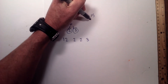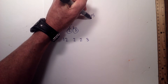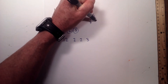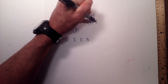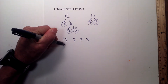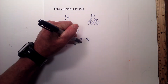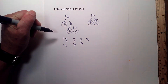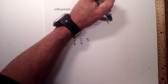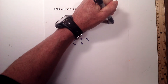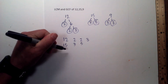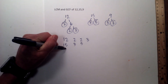For 15, it is 3 times 5 equals 15 — circle the 3 and the 5 because they are both prime: 3 and 5. And now for 9, it is 3 times 3 — circle both of these because they are prime. So now I have all the prime factors of my numbers.